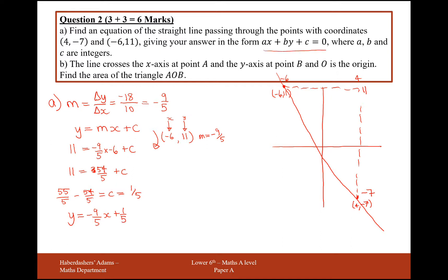If we remember in our question, it doesn't want it in y = mx + c form, it wants it in ax + by + c form, where a, b, and c are integers. Integers is another word for whole numbers. So if I times through by 5, I'm going to create whole numbers.